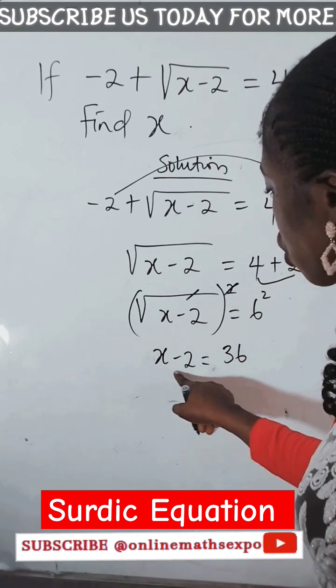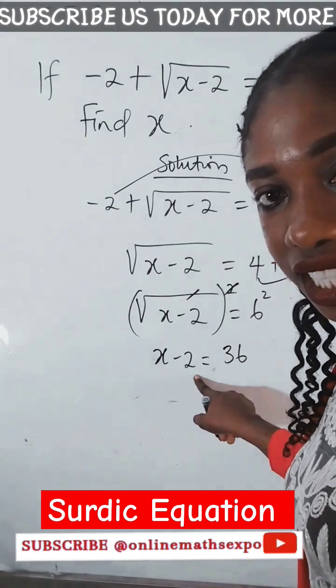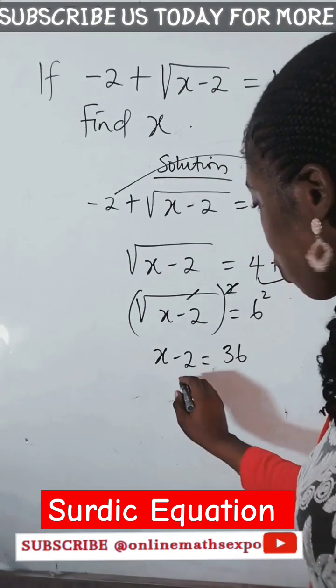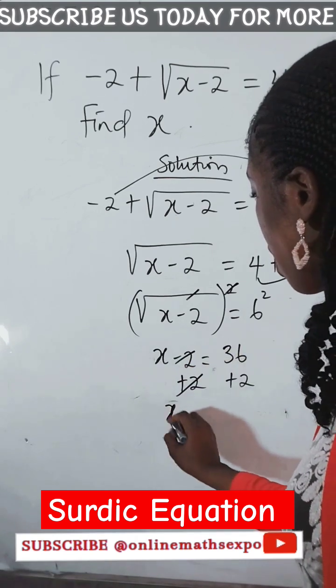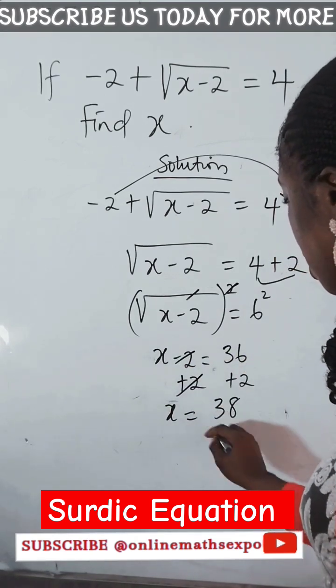So to find x, remove the -2 using its inverse, which is +2, and add it to both sides of the equation. This cancels, giving us x = 38 when we add these together.